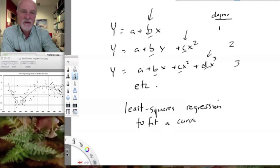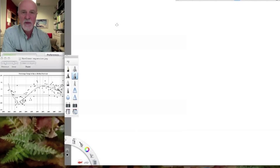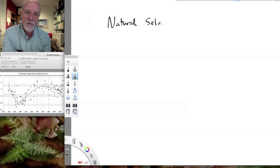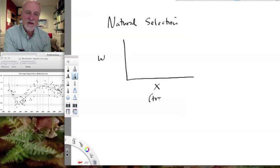So what kinds of examples could we have of this? One of these might involve natural selection itself. When we have fitness as our y-axis and x, some trait, as our x-axis, we can characterize natural selection through regression.